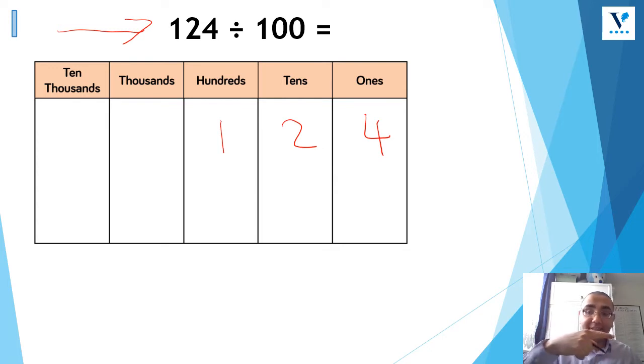So if timesing, I'm making the number bigger. When you're dividing, you're making the number smaller. So therefore, the direction in which we're going to be moving the digits is to the right. And I'm also going to be moving it two places. The number of zeros is telling me that I'm going to move it two places.